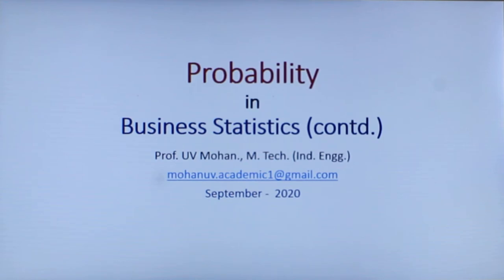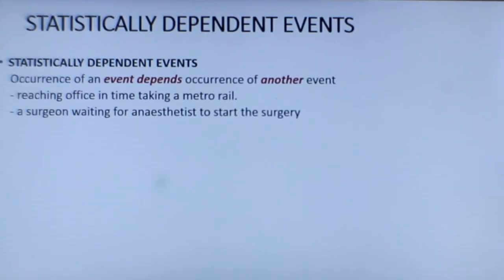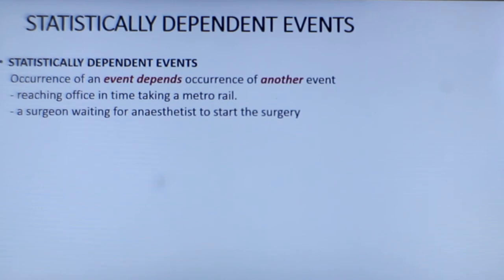Under statistically dependent events we have joint occurrence and conditional occurrence. Joint occurrence is two events occurring in succession, and a conditional event is an event that has occurred with another event occurring given it. Examples of a statistically dependent event include reaching office by metro rail, or a surgeon waiting for the anesthetist to start the surgery — one activity is dependent on another.